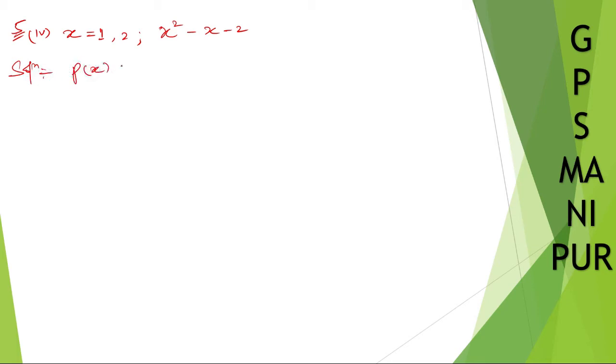P of x is equal to this one, right? So x squared minus x minus two, okay.